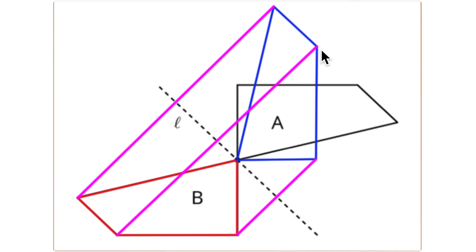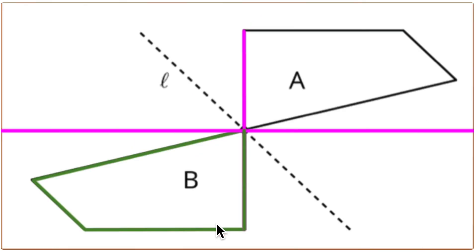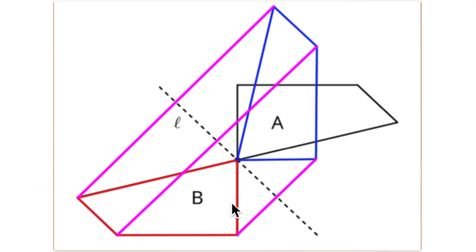This point moves an equal distance to the line of reflection, perpendicular to it, and then an equal distance on the other side — that's its corresponding point. This point here is the same: both distances from the line of reflection are equal, and they are perpendicular to that line.